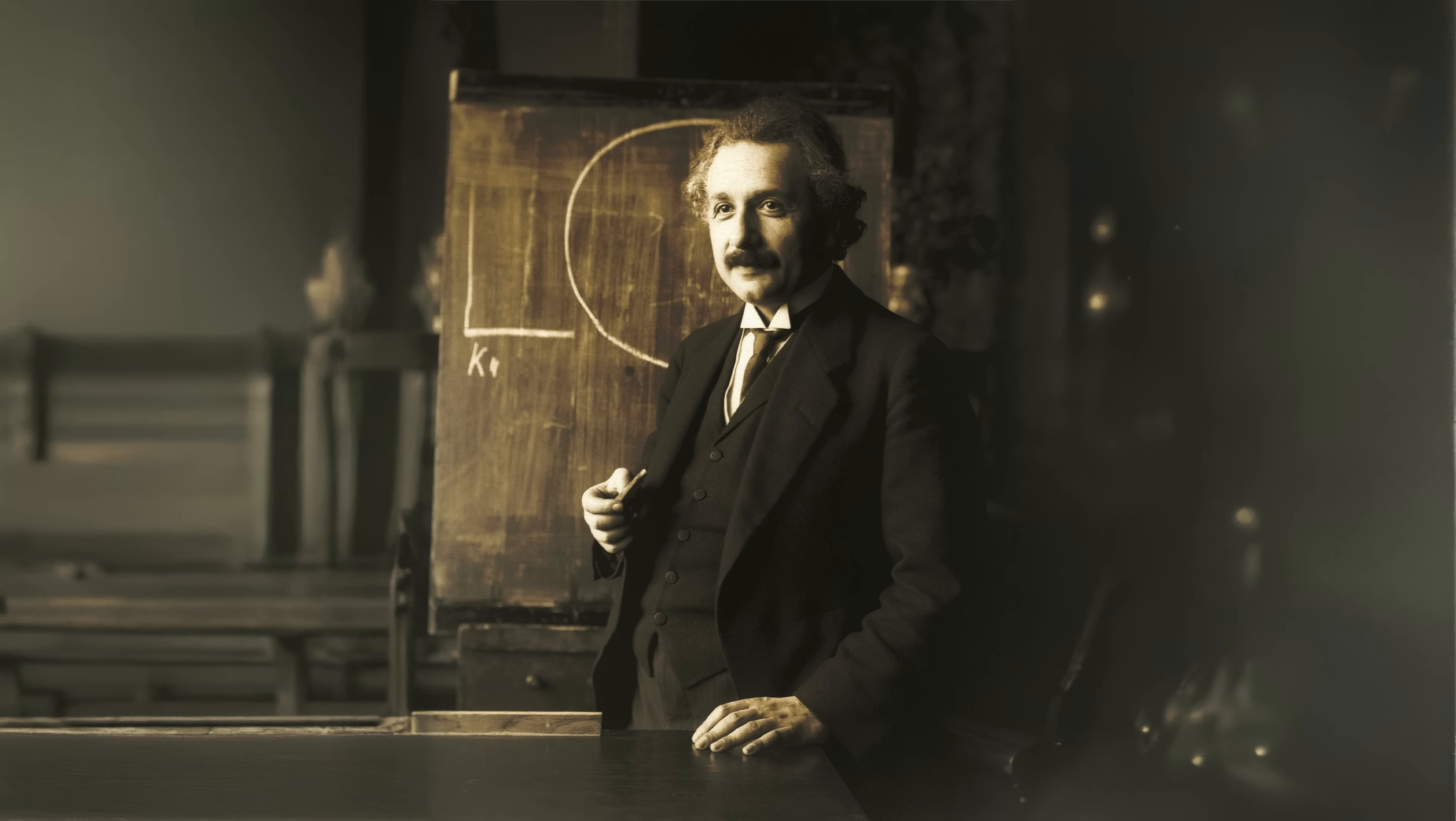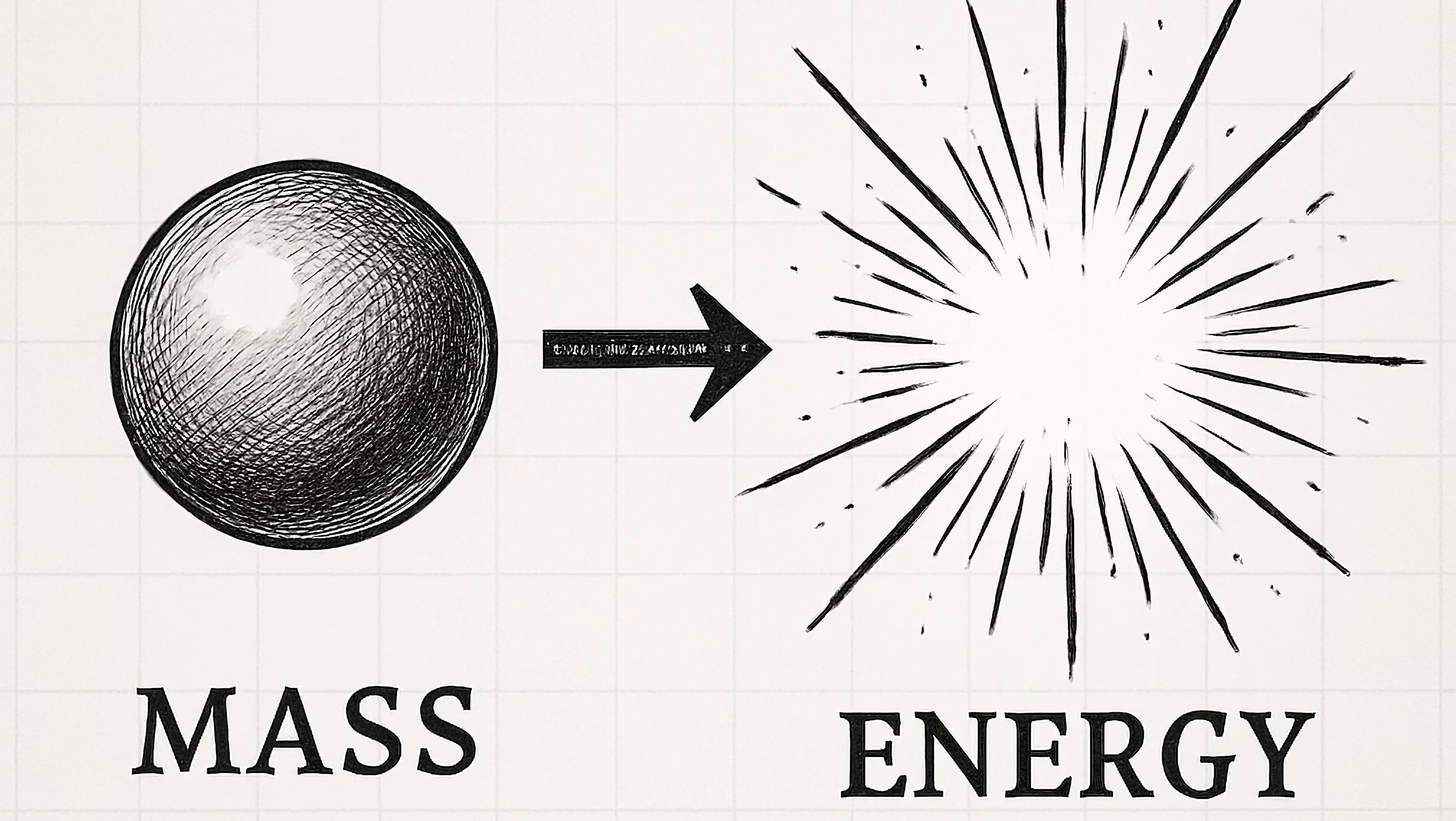It was first derived by Albert Einstein in 1905 as part of his special theory of relativity, revealing that mass and energy are equivalent and interchangeable.